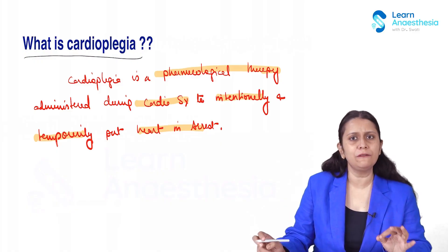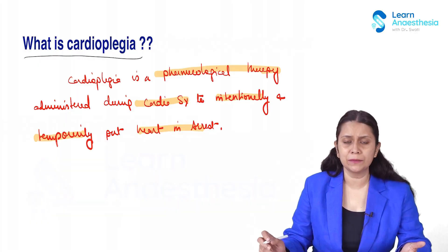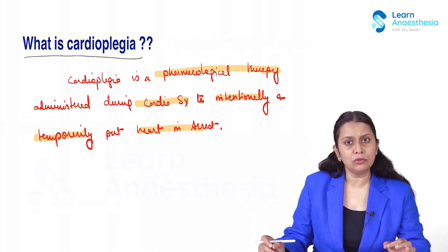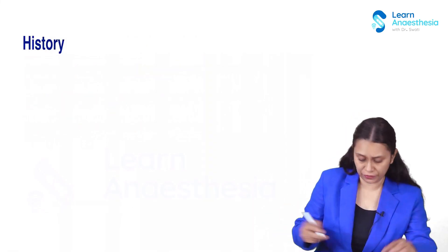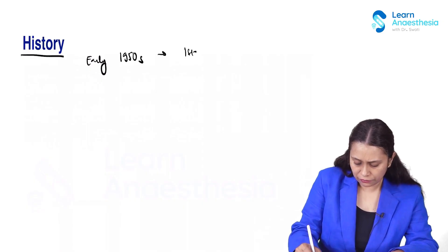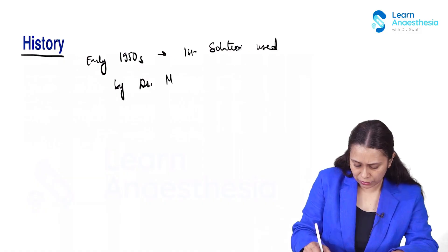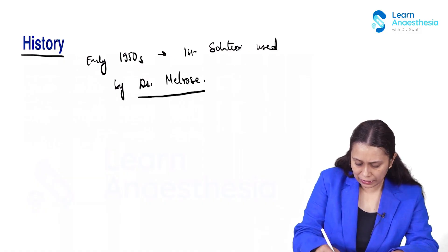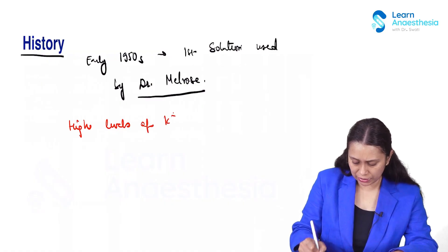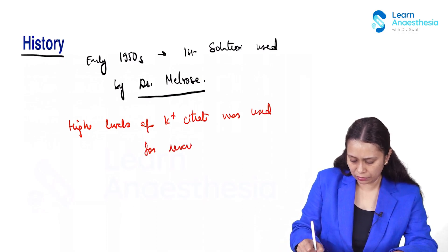So what is the history of cardioplegia? Who was the first person and when was the first cardioplegia introduced? Today, most cardioplegic solutions are potassium-based. The first solution was used by Dr. Melrose in the early 1950s, and it was also a potassium-based cardioplegic solution. In this, high levels of potassium citrate were used for reversible cardiac arrest.